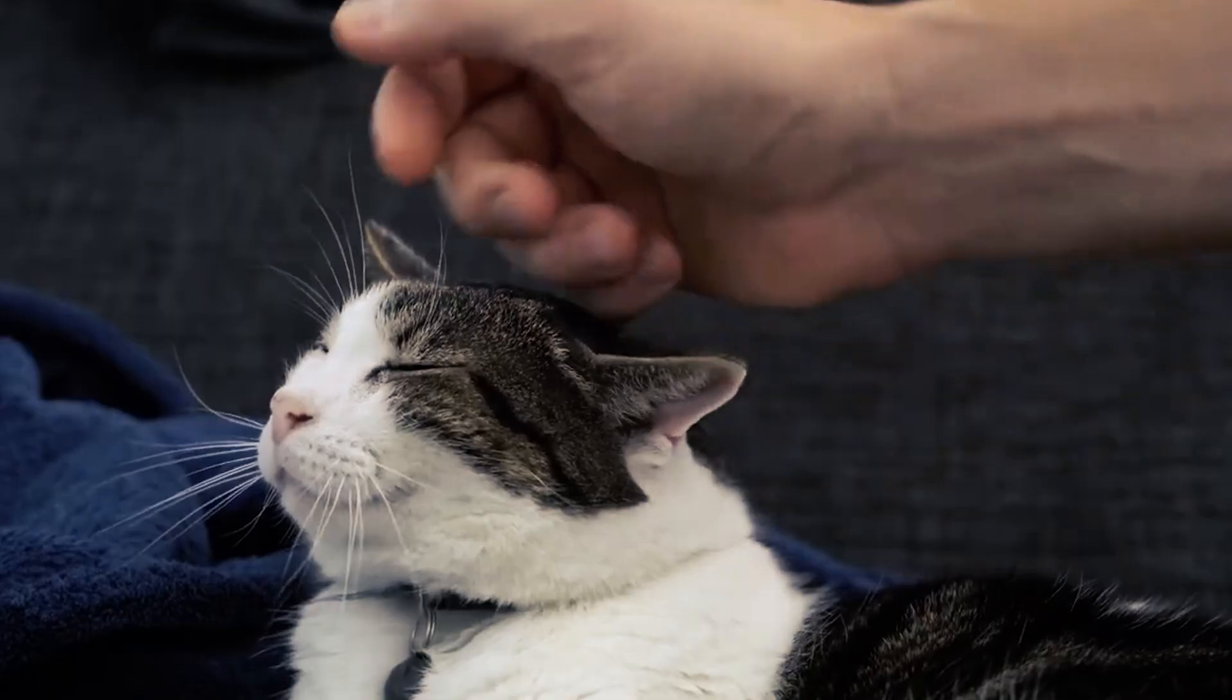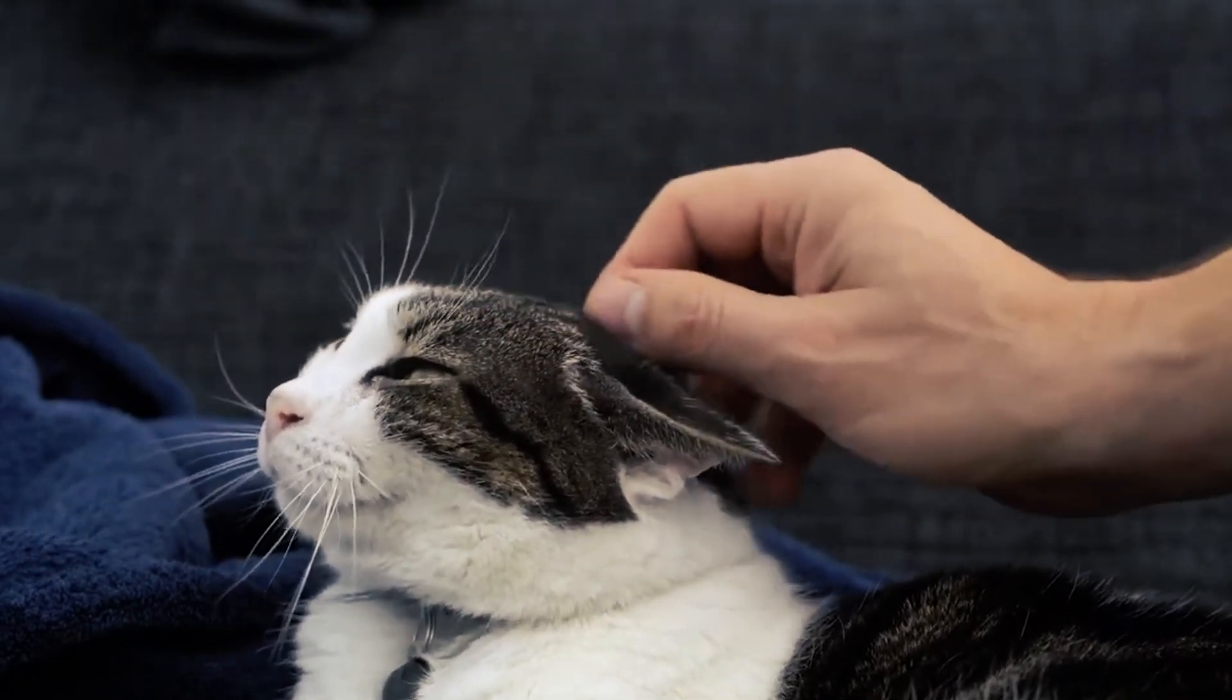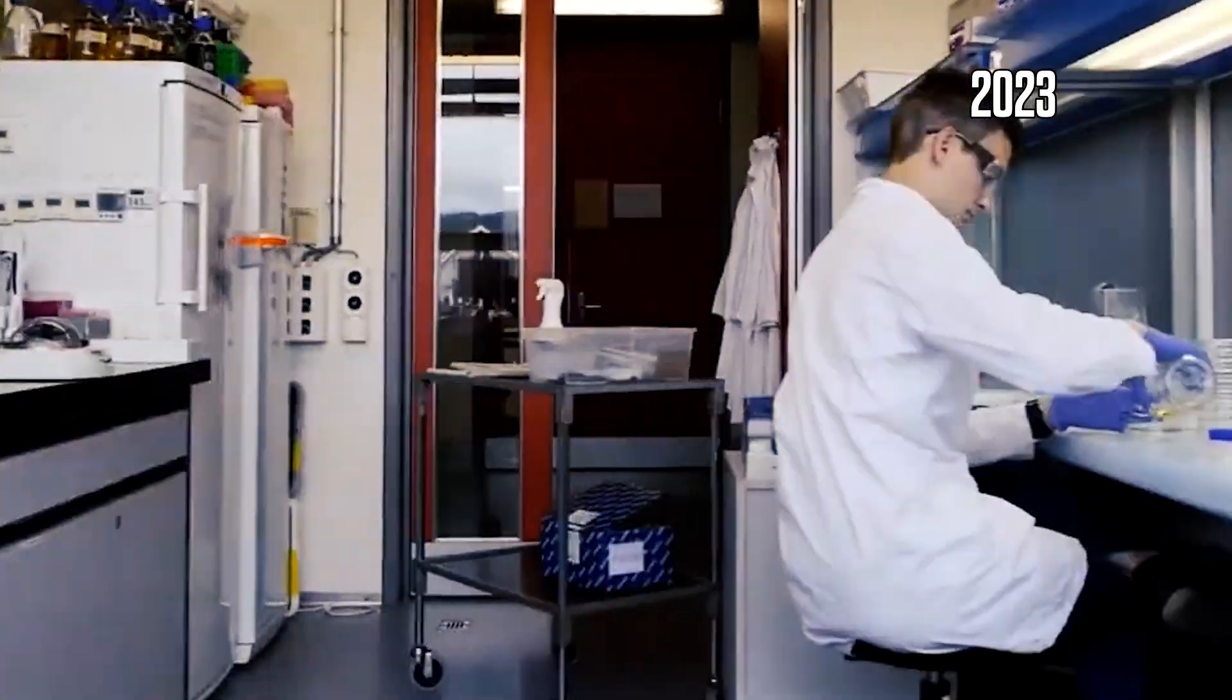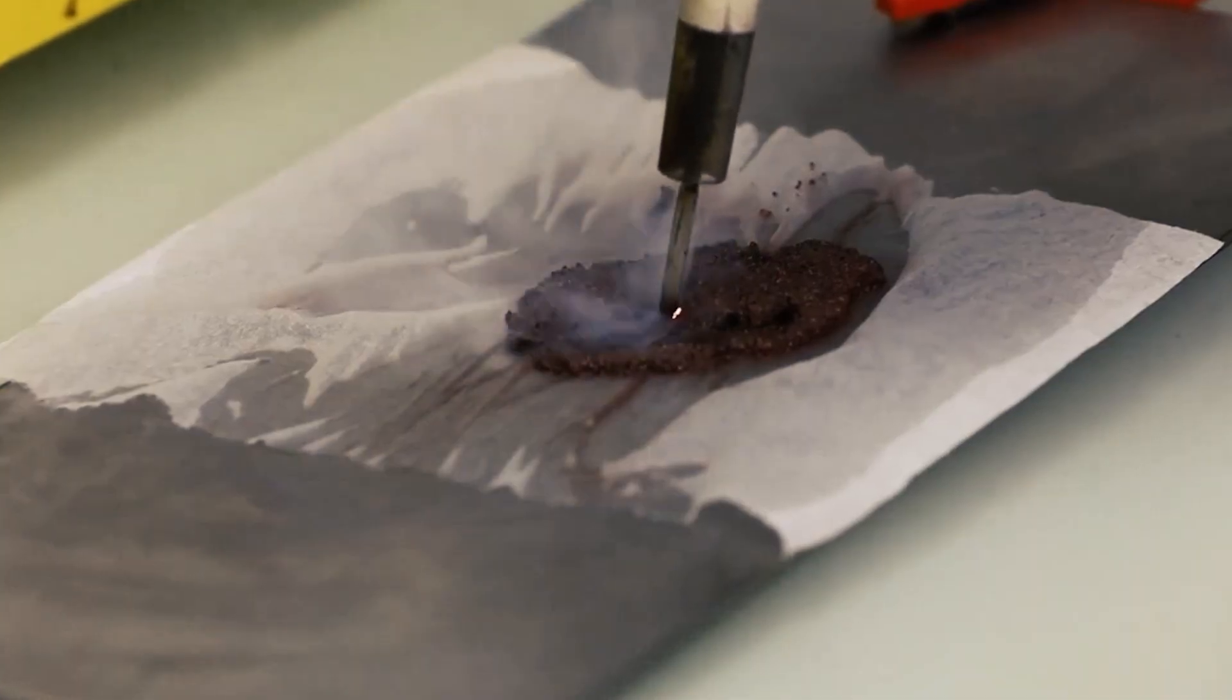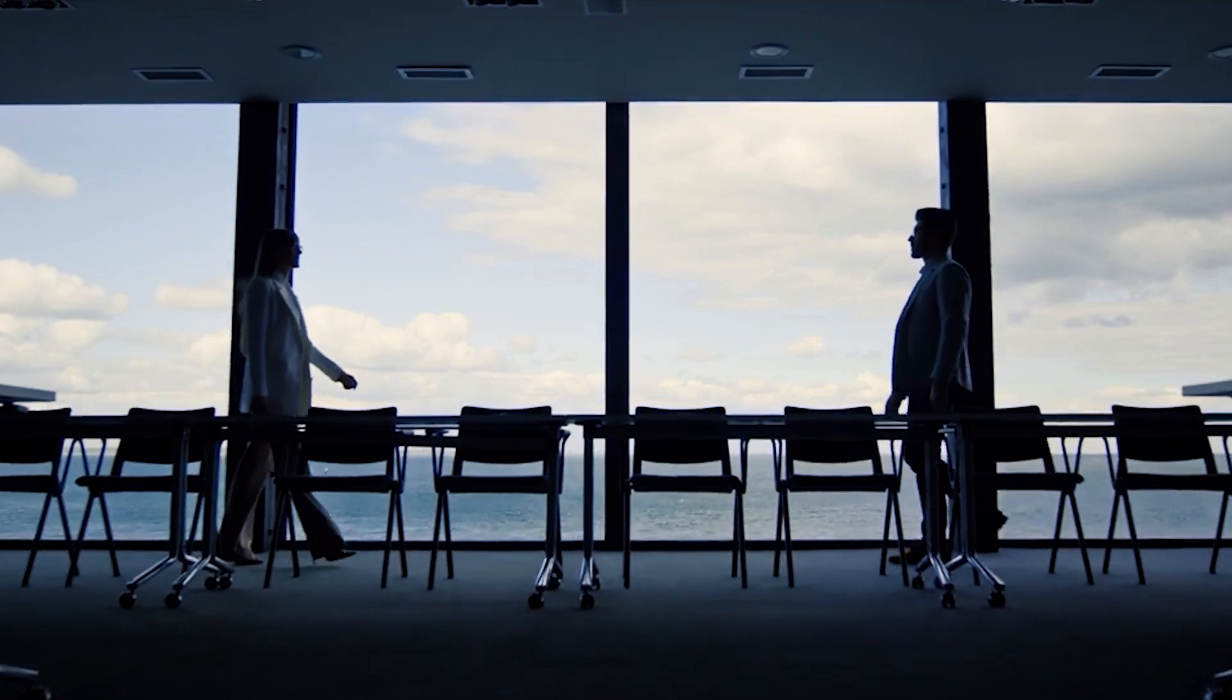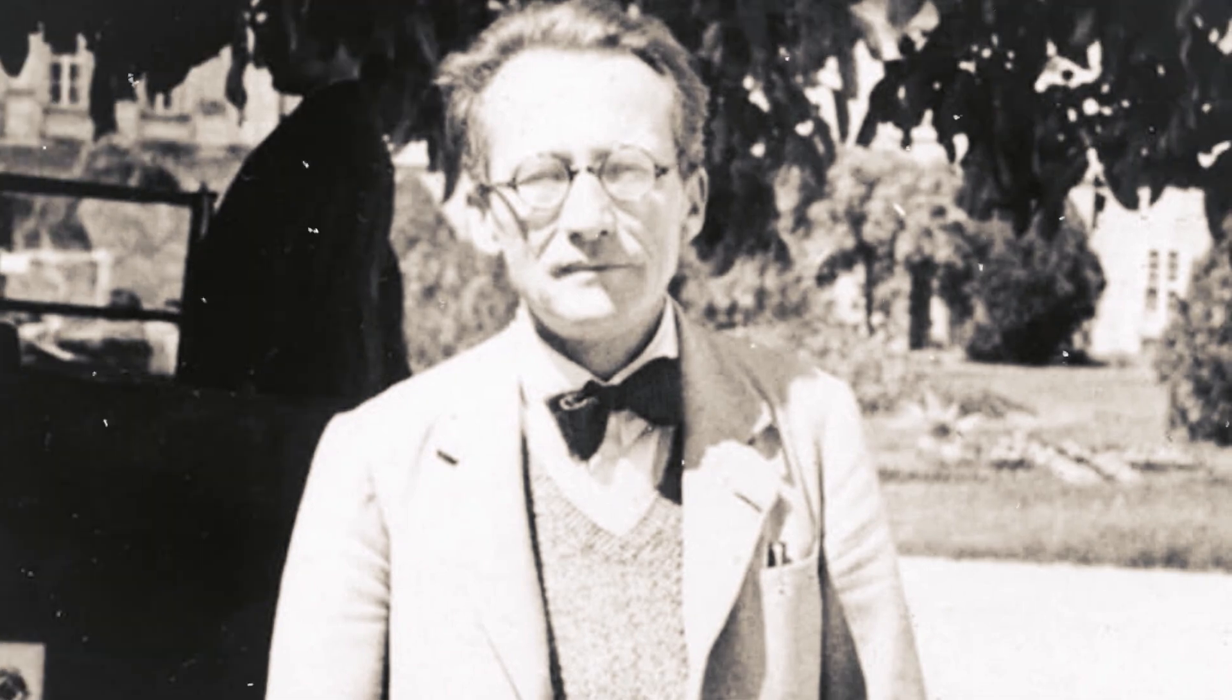Ironically, Schrödinger created this thought experiment to show how absurd quantum uncertainty is. But ironically, his fictional cat is now the best-known example of quantum mechanics. There's more. In March 2023, researchers at the Swiss Federal Institute of Technology managed to put a 16-microgram sapphire crystal into a superposition of vibrational states. It was as if the crystal was vibrating in multiple ways at once. Who knows? Maybe one day we'll learn how to put humans into quantum superpositions too.